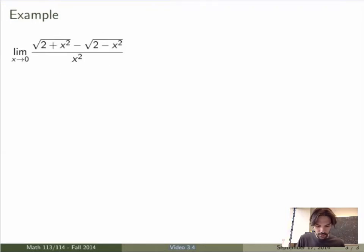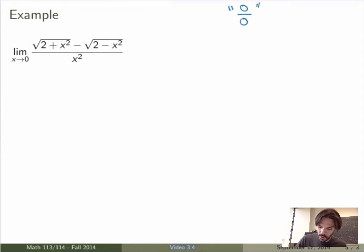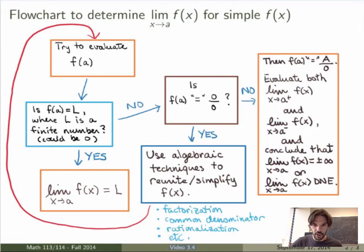Let me do one last example using the flowchart. Suppose I'm trying to evaluate the limit as x goes to 0 of this complicated expression. According to the flowchart, the first thing I should do is evaluate the function at x equals 0. If I set x equals 0, I get square root of 2 minus square root of 2 over 0 — square root of 2 minus square root of 2 is 0 — so I'm in the case 0 over 0.